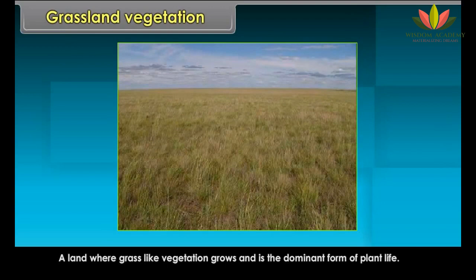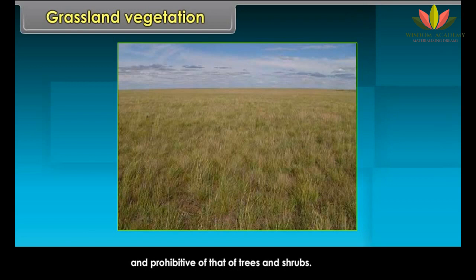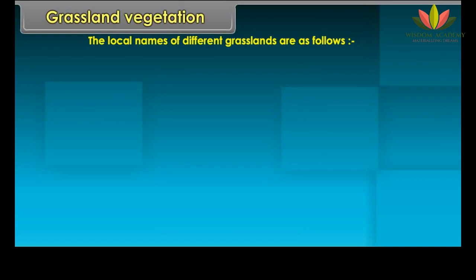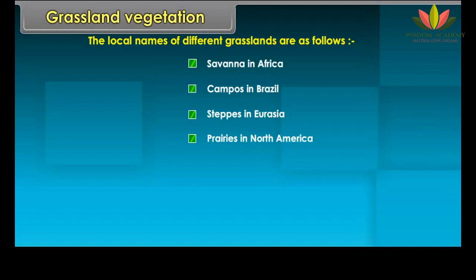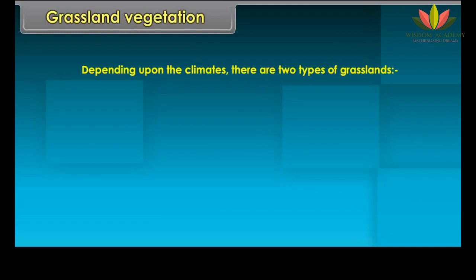Grassland Vegetation refers to land where grass-like vegetation grows and is the dominant form of plant life. Moderately dry climatic conditions and seasonal disturbances such as floods or fires are conducive to the growth of grasses. Depending upon the climate, there are two types of grasslands: tropical grasslands and temperate grasslands.